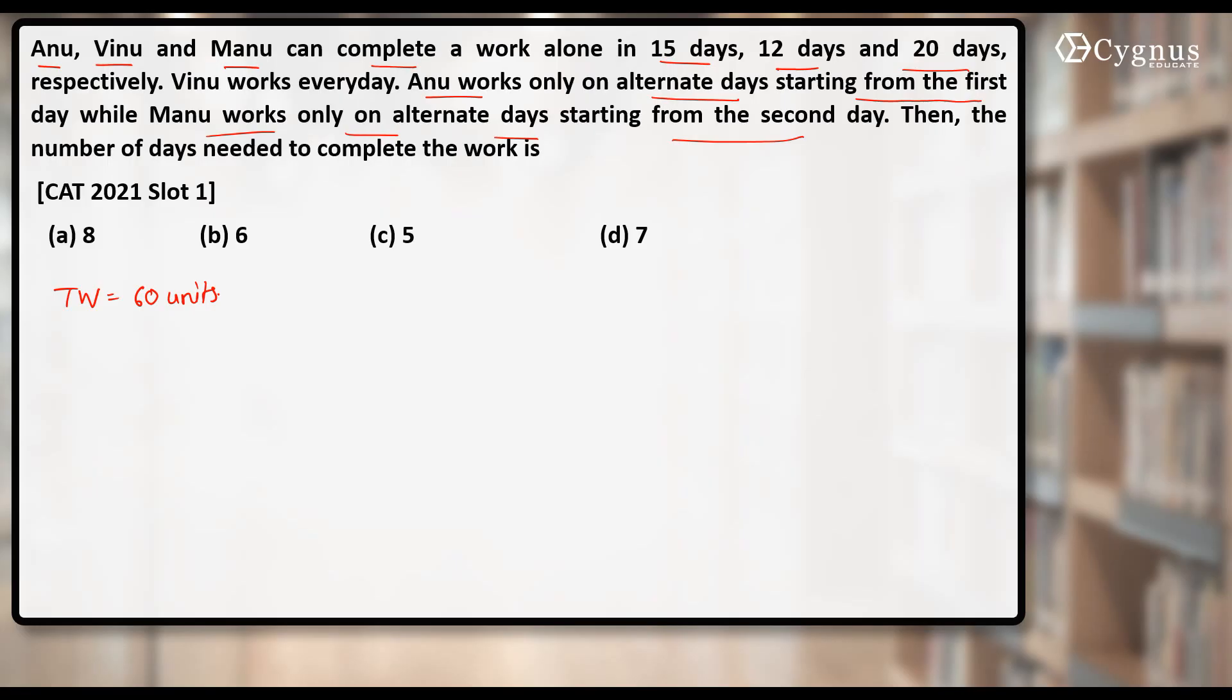Anu can finish this work in 15 days, so Anu's one day's work will be 60 by 15, that is equal to 4 units. Similarly Vinu can do 60 by 12, that is 5 units per day, and Manu 60 by 20, that is 3 units per day.